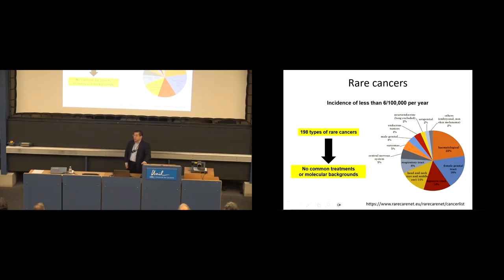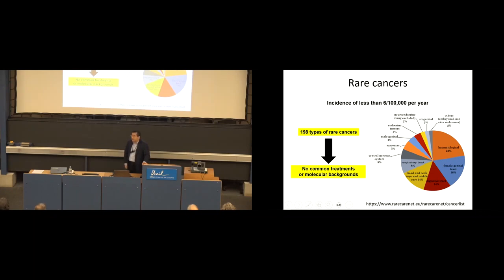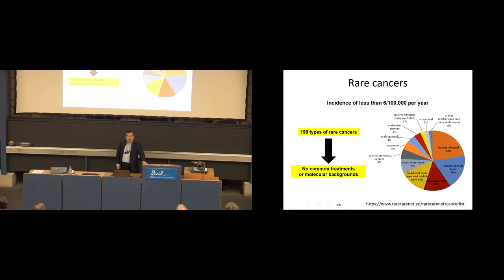This definition is quite unique because usually malignancies are defined according to their original organs or molecular background. But in the case of rare cancers, they are defined according to the number of patients. Because of this definition, many malignancies are classified into this category — according to Rare Cancer Net, we have 198 different malignancies in this category. They do not share any common molecular background, and all rare cancers behave differently, making the study of rare cancer quite complex.